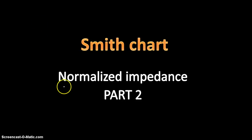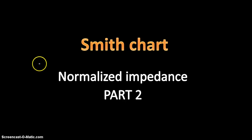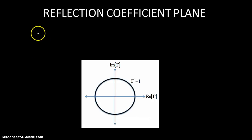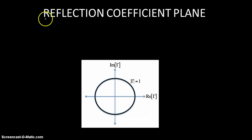Smith Chart part 2. In this tutorial we are going to introduce a new term called normalized impedance. In the previous part we discussed the reflection coefficient plane, wherein the reflection coefficient is written as k equal to the real part of k plus an imaginary part of k.